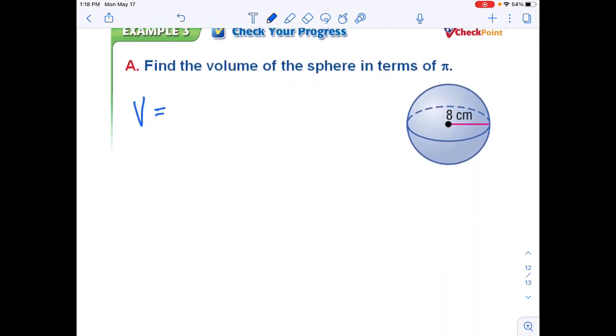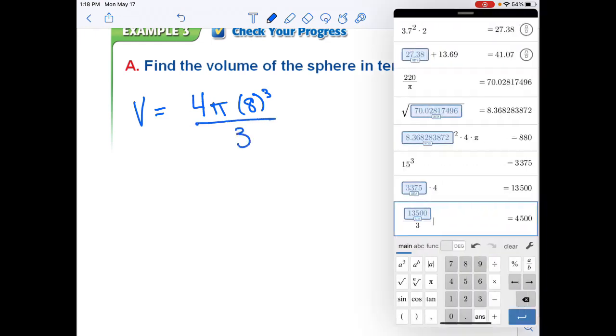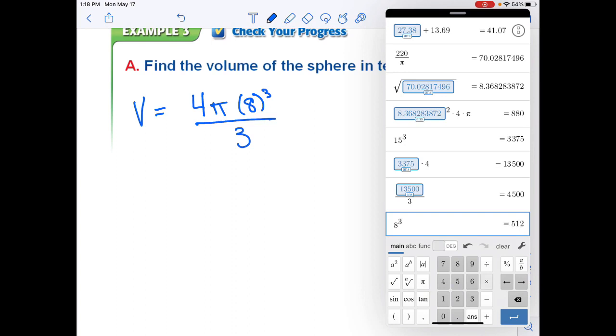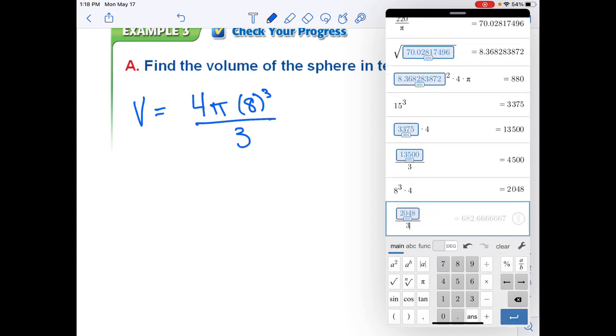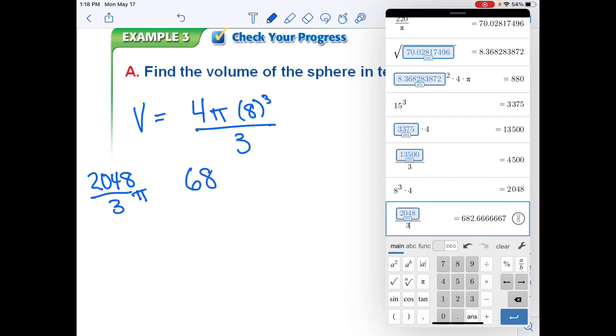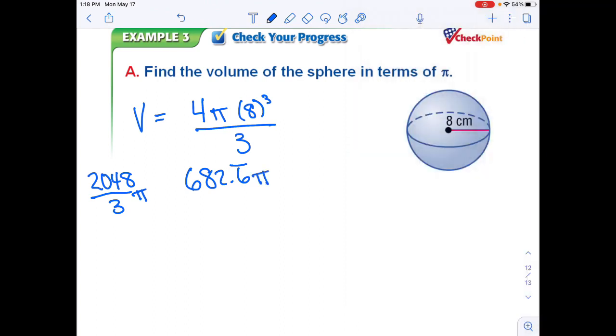And lastly, a very simple one. Find the volume of the sphere in terms of π. We have 4πr³ divided by 3. So 8 cubed divided by 3. And we end up getting either 2048 over 3 π, which is totally fine, or 682.6 repeating π. These are both fine. The second one is just a repeating decimal. But both of those would be good answers.